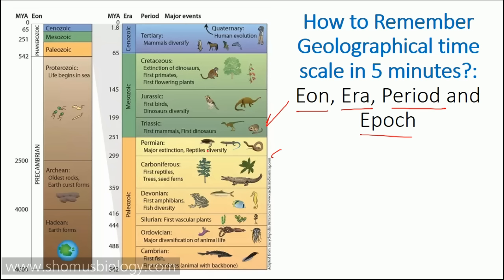There are two things you need to look for: you need to know all the different periods, linked with different animals and plants, and the major events in each period. This video will not help you understand the major events of each period, but it will help you construct this table from scratch. You will be able to draw this whole table on your own without looking at anything else after watching the video.